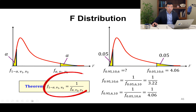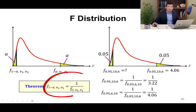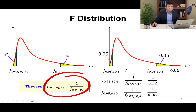Why do the degrees of freedom switch? Because you are taking a ratio, and when you flip it, V1 and V2 switch — since you put F in the denominator, you have to switch the degrees of freedom. So F(0.95, 10, 6) = 1 / F(0.05, 6, 10). It is not 1 / F(0.05, 10, 6); instead you must use F(0.05, 6, 10).